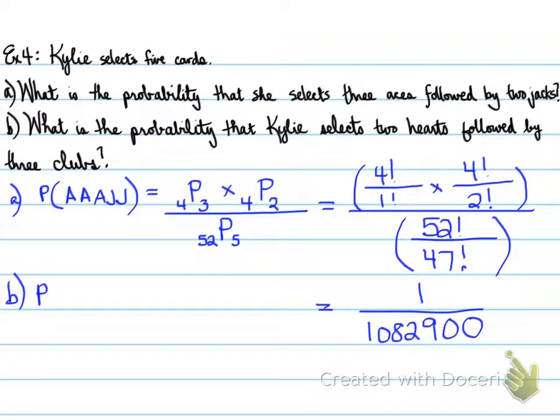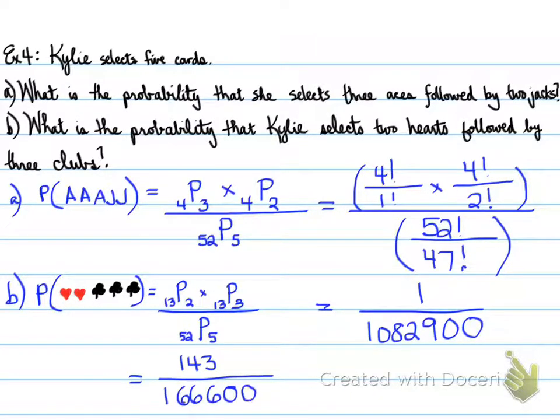Next, what is the probability that Kylie selects two hearts followed by three clubs? So, we need to think about how many hearts there are. Well, there are 13 altogether in a deck of cards, and we want to choose two of them. And then the clubs, how many clubs are there? That's right, 13, and we want to choose three of them. So, 13 choose two for the hearts, 13 choose three for the clubs, and then we divide it by the total number, and that is 52 in total. And how many are we choosing out of the deck? That's right, five. So, the result here is going to be 143 over 166,600.